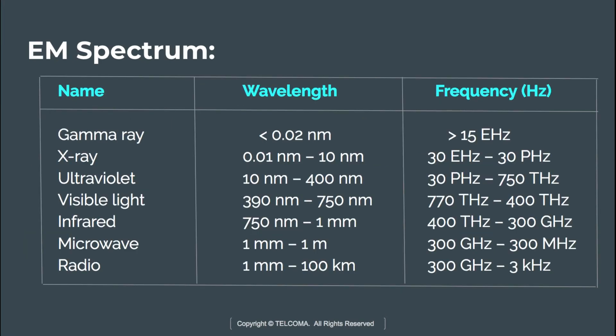Coming to the next part, we will discuss the electromagnetic spectrum. The EM spectrum includes gamma rays, X-rays, ultraviolet, visible light, infrared, microwave, and radio waves. Microwaves have frequencies from 300 MHz to 300 GHz, and radio waves range from 300 GHz down to 3 kHz. Microwave frequencies come before radio frequencies in the spectrum, and microwaves have a vast field of usage.